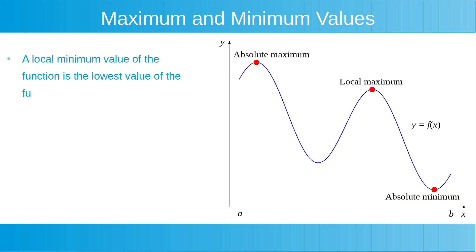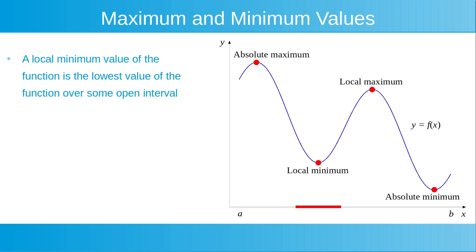A local minimum value of the function is the lowest value of the function over some open interval. On this open interval, currently shown highlighted with a red line, there's a local minimum value here, now shown highlighted in red.